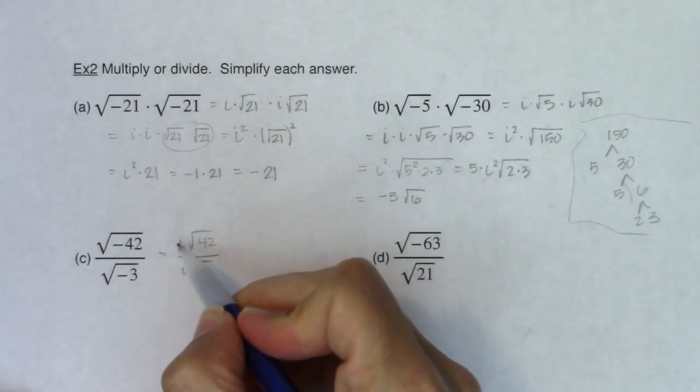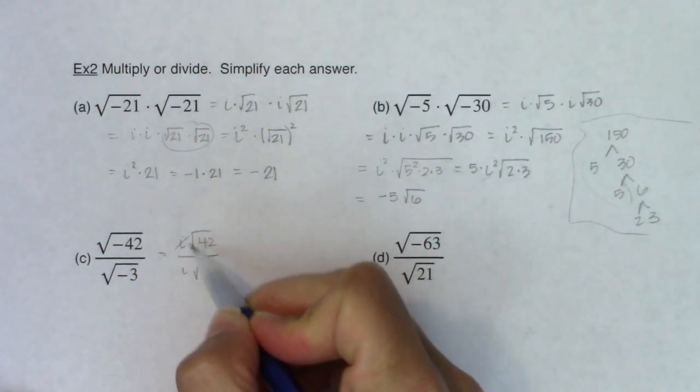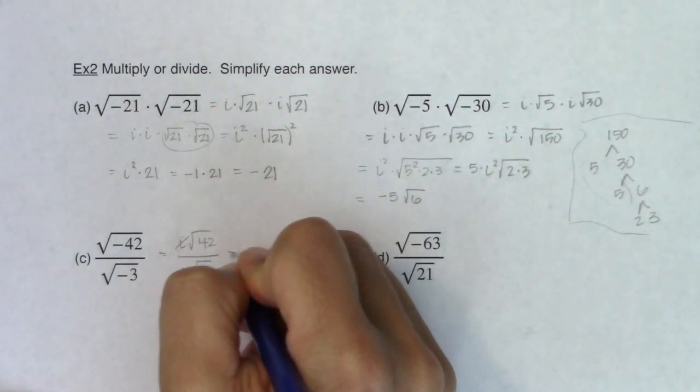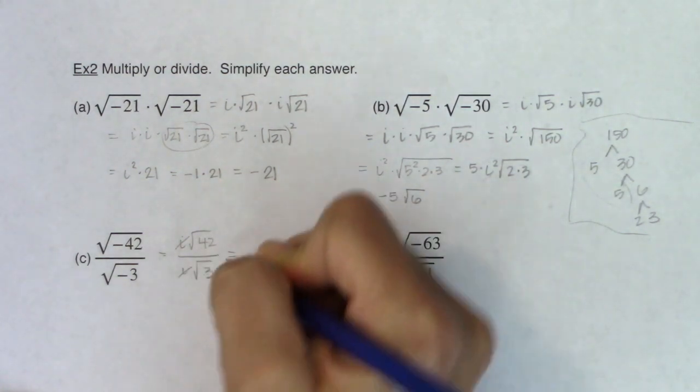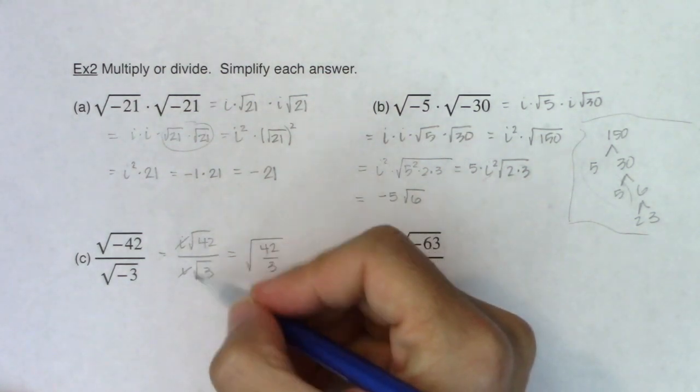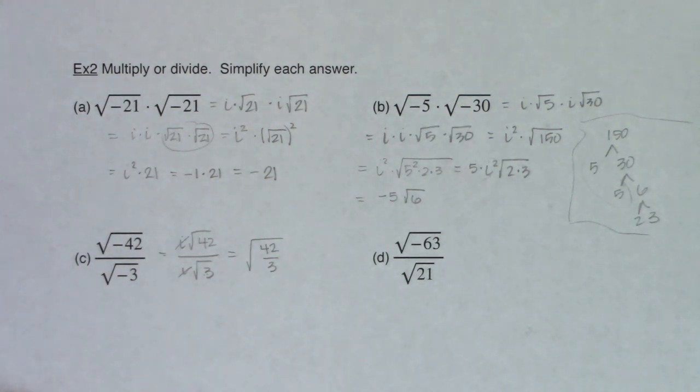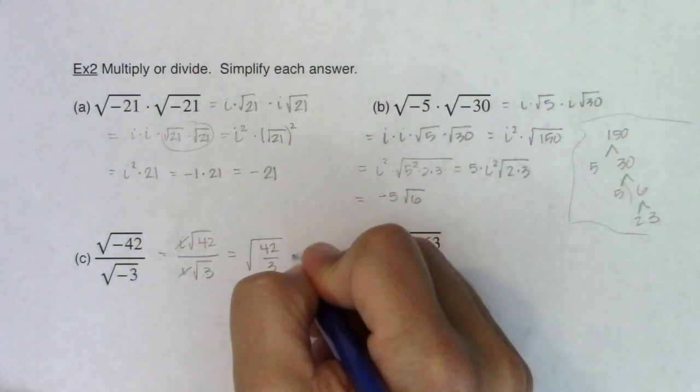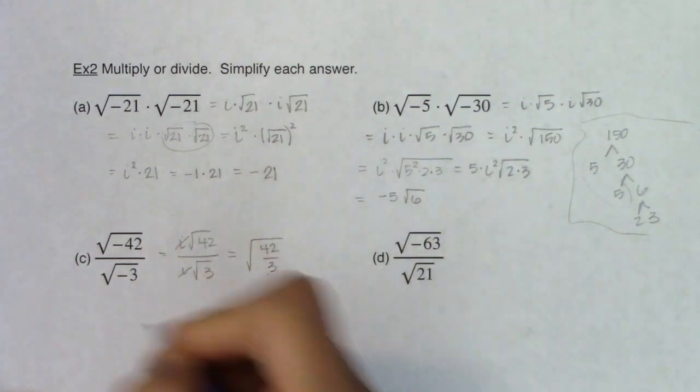And just looking at that, because this is all multiplication, my i's are going to divide out. So then let's break this up. If I have the square root of 42 over the square root of 3, I can write that under one gigantic radical. Same index, so I can put the 42 and the 3 under the same radical. 42 divided by 3 is 14.